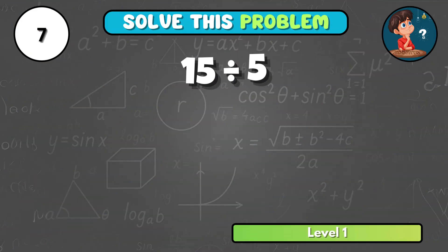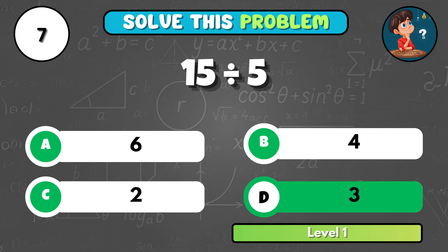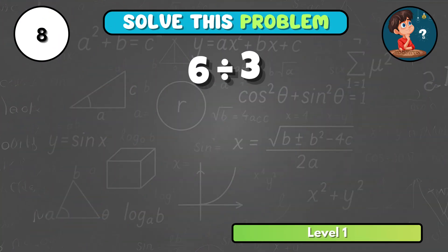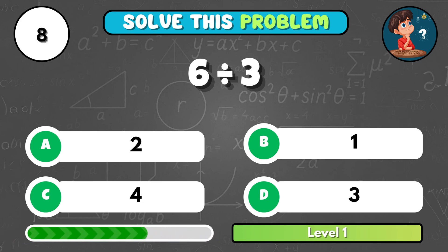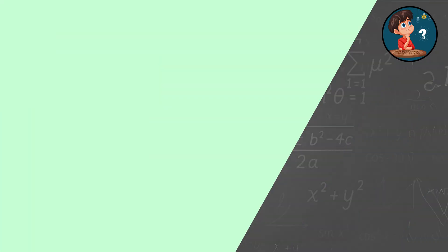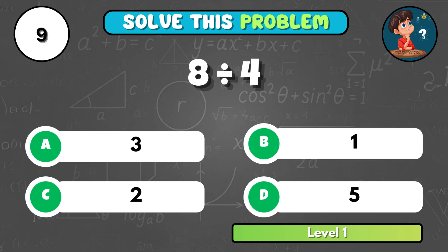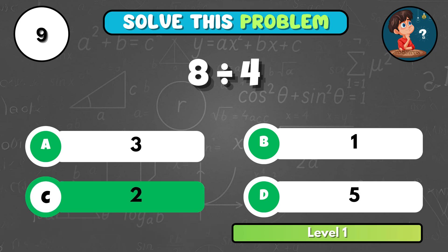Here's an easy one — fifteen divided by five equals what? That's D, three. Can you work out six divided by three? It comes to A, two. Try this: eight divided by four is what? That equals C, two.